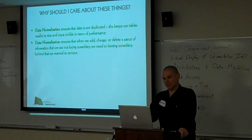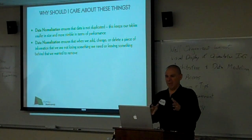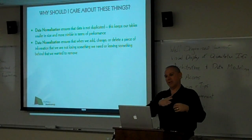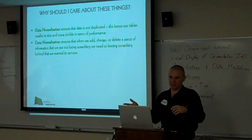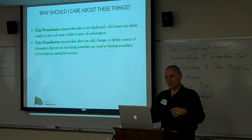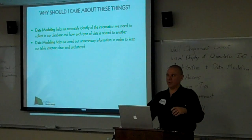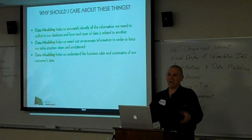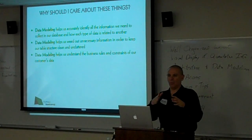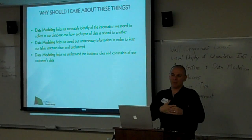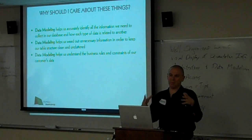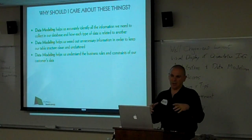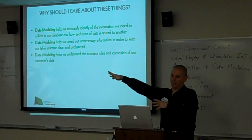Why should you care about data normalization? Data normalization is all about making your data structure clean and keeping it efficient. You don't want data duplicated. You want to know that if you delete something, that's all you're deleting — you don't want to lose information, and you don't want to have to enter things twice. That's the whole point. When you're talking about data modeling, we're collecting all the information about what we want to track, weeding out information we don't need, and applying business rules. Data modeling is all about taking what happens in the real world and boiling it down to what we need when we're building a system — just like building a model airplane, it's a smaller scale model of the real world.